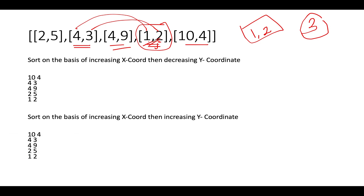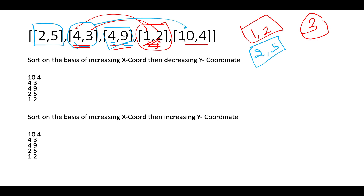The second weak element is [2,5] because [4,9] has both entries greater than [2,5], satisfying both conditions. The third weak element is [4,3] because [10,4] has both entries greater than [4,3] — 10 is greater than 4 and 4 is greater than 3 — so [4,3] also turns out to be a weak element. That gives us a total of 3 weak elements.